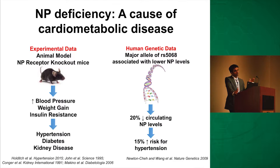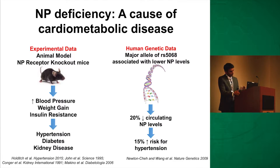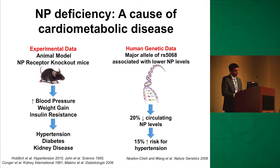Genetics is really one way to think about this without reverse confounding. People who are born with lower NP levels have an increased risk of disease — it travels one way. You start with your DNA and you develop the disease. This is one of the cleanest models confirming natriuretic peptide deficiency as a key concept, which Dr. Wang put forward.